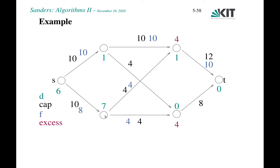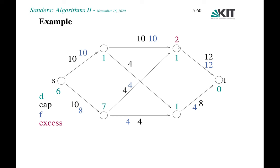There are now two active nodes left. We choose one; it has a horizontal edge, so we relabel and perform a non-saturating push. Then only one active vertex remains with residual capacity 2 — this edge is already downward, so we do a saturating push. But excess remains. We cannot push forward since the edge is saturated, so we return flow along a reverse edge, reducing the flow along it by 2.